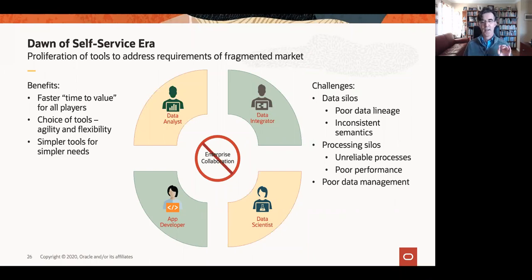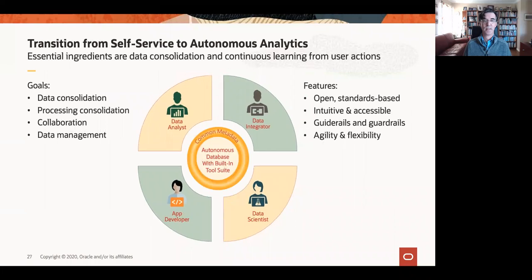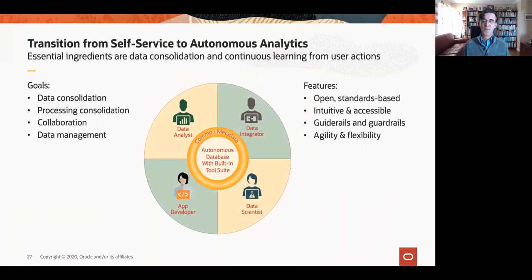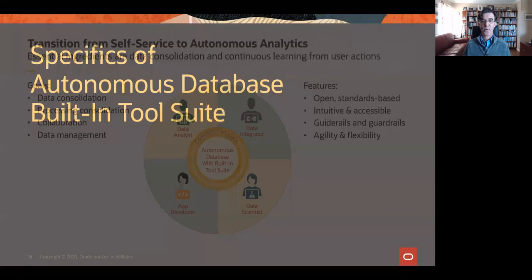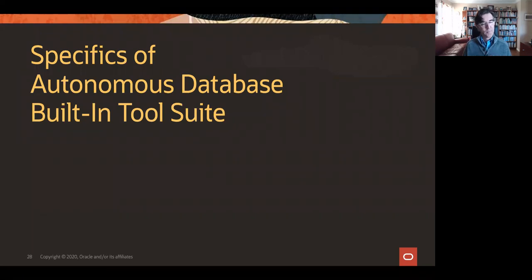The enterprise data warehouse became just one curated source of data among many others. This great leap in agility came at the expense of data quality, consistent semantics, reliable data lineage, performance, and reliability. Our opportunity is to address this fragmentation and consolidate these silos without sacrificing the gains in flexibility and agility. We foresee a transition from self-service to autonomous analytics — data consolidation and continuous learning from user actions are the essential foundation for re-establishing strong data management while retaining the hard-won benefits of agility.